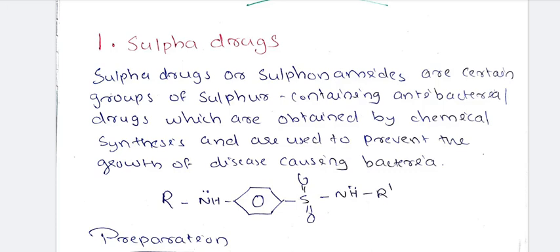Sulfonamides are certain groups containing sulfur-nitrogen, i.e., sulfur-containing antibacterial drugs. The sulfonamide group is called NHA — NH2 will be the amine. So NHA is the functional group in sulfa drugs. Sulfonamides are sulfur-containing antibacterial drugs which are obtained by chemical synthesis.